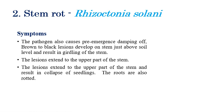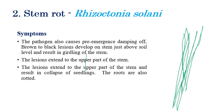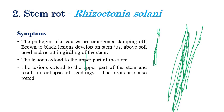The second disease is stem rot. Stem rot is caused by Rhizoctonia solani. Initially, lesions start on the lower surface of the stem. From above the soil level, small black lesions or spots can be seen.